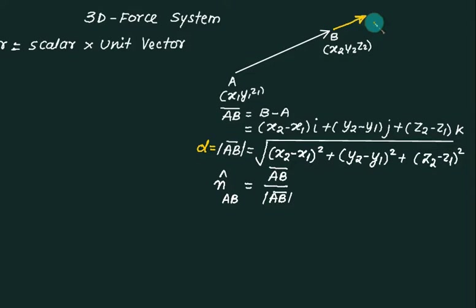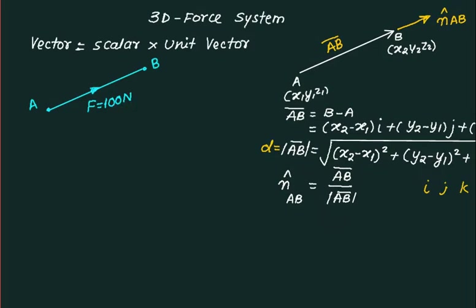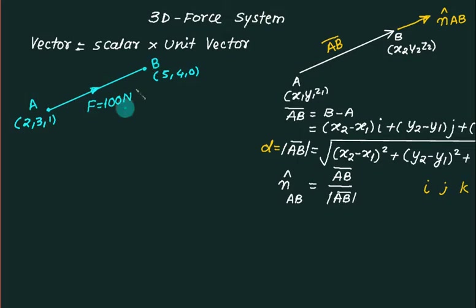The unit vector n-cap AB has the same direction as the vector AB bar; the only difference is that the magnitude of the unit vector is 1. For example, let point A equal (2, 3, 1) and point B equal (5, 4, 0). A force of 100 Newtons passes from A to B. Are we able to write down the force vector?